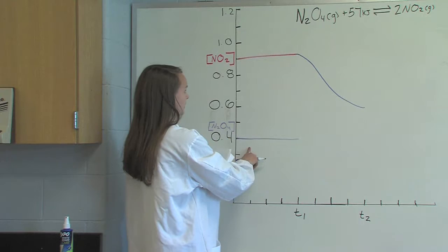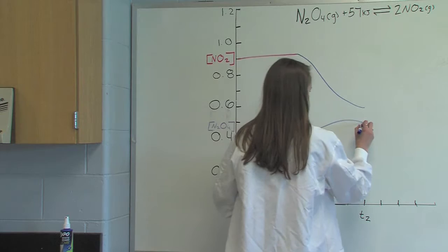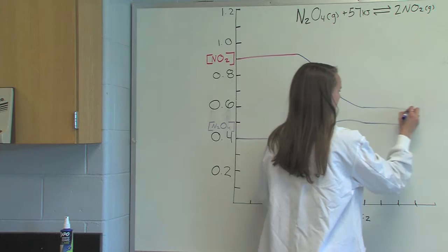Then for N2O4, it will increase only by 1. The system will then reach equilibrium again at T2 and the concentrations will balance out.